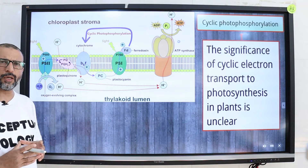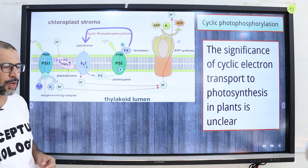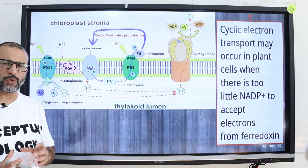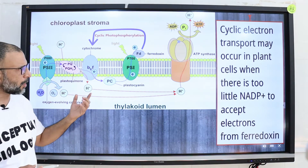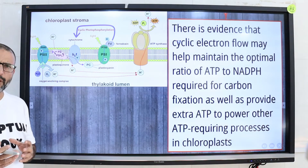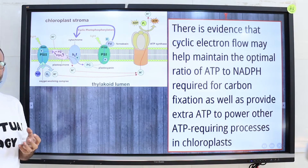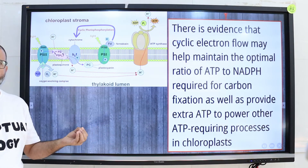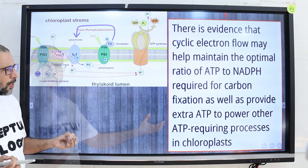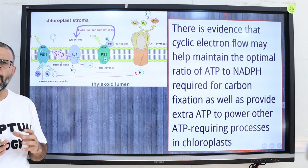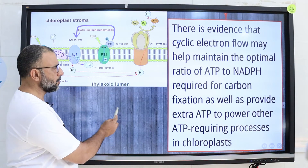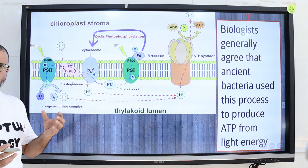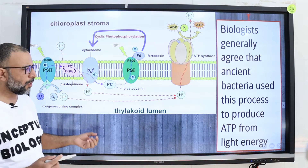The significance of cyclic electron transport to photosynthesis in plants is unclear. It may occur in plant cells when there is too little NADP to accept electrons from ferredoxin. There is evidence that cyclic electron flow may help maintain the optimal ratio between ATP and NADPH required for carbon fixation, as well as provide extra ATP for other ATP-requiring processes in chloroplasts. Biologists generally agree that ancient bacteria used this process to produce ATP from light energy.